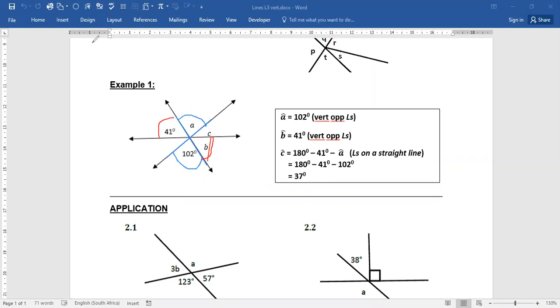So you will find the X formation for angle B is here. So angle B is vertically opposite to 41 degrees. So angle B is equal to 41 degrees, vertically opposite angles.